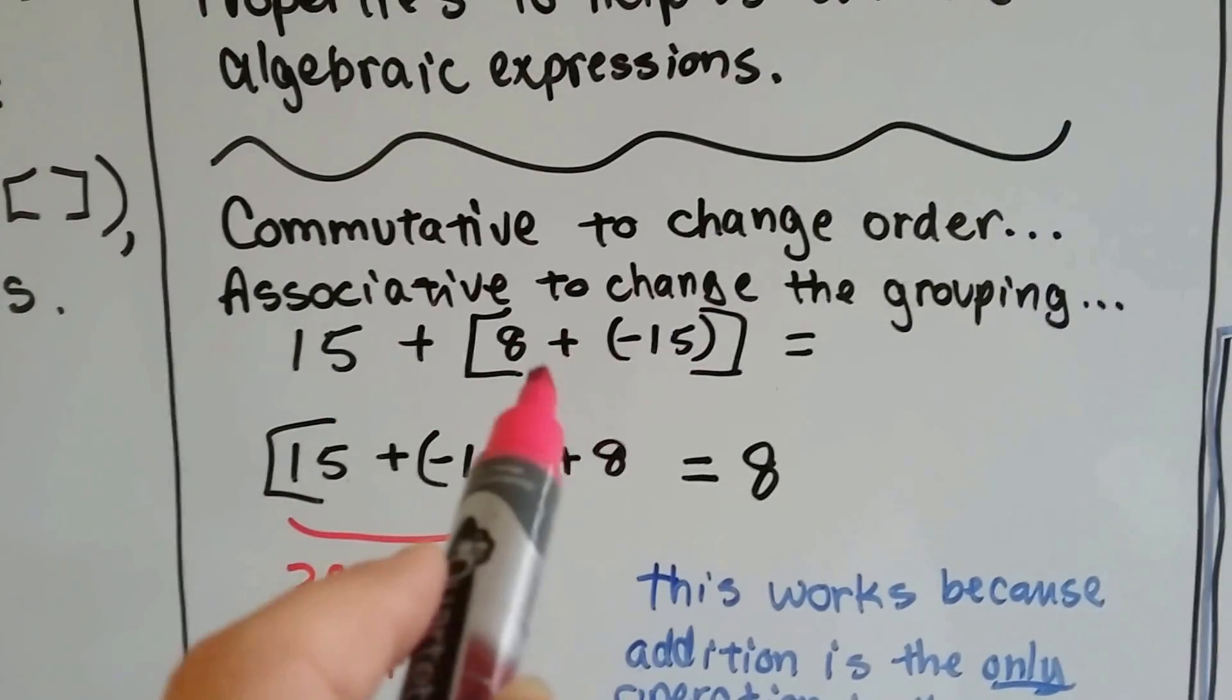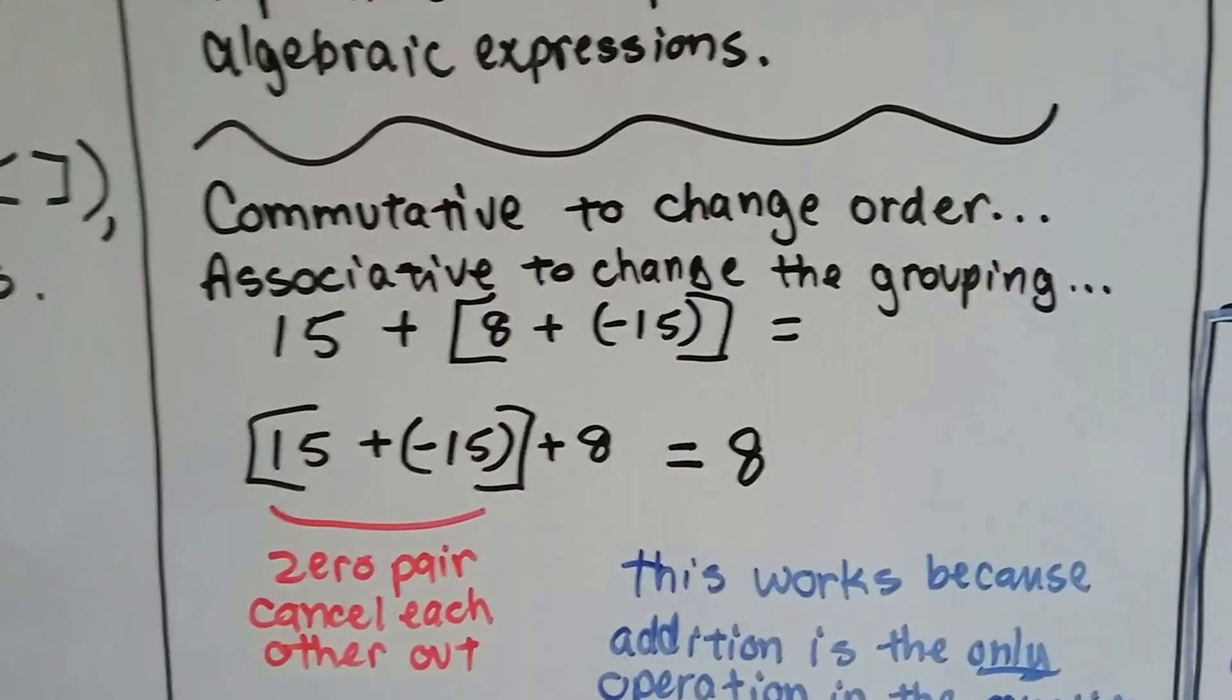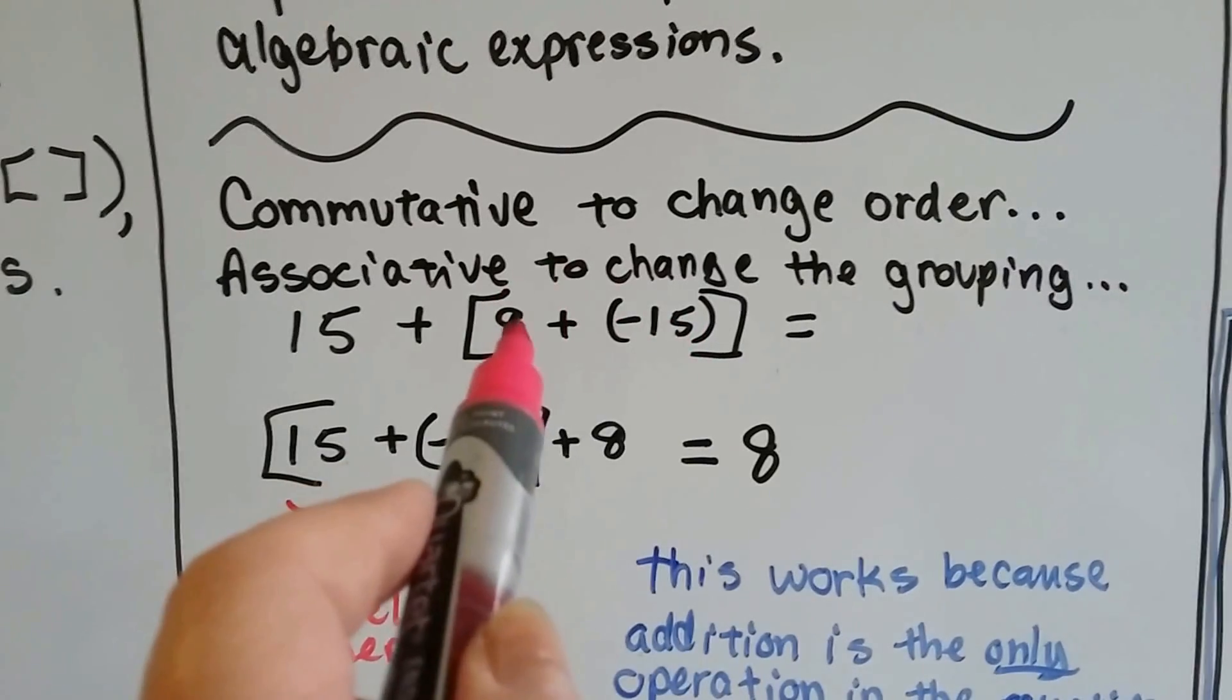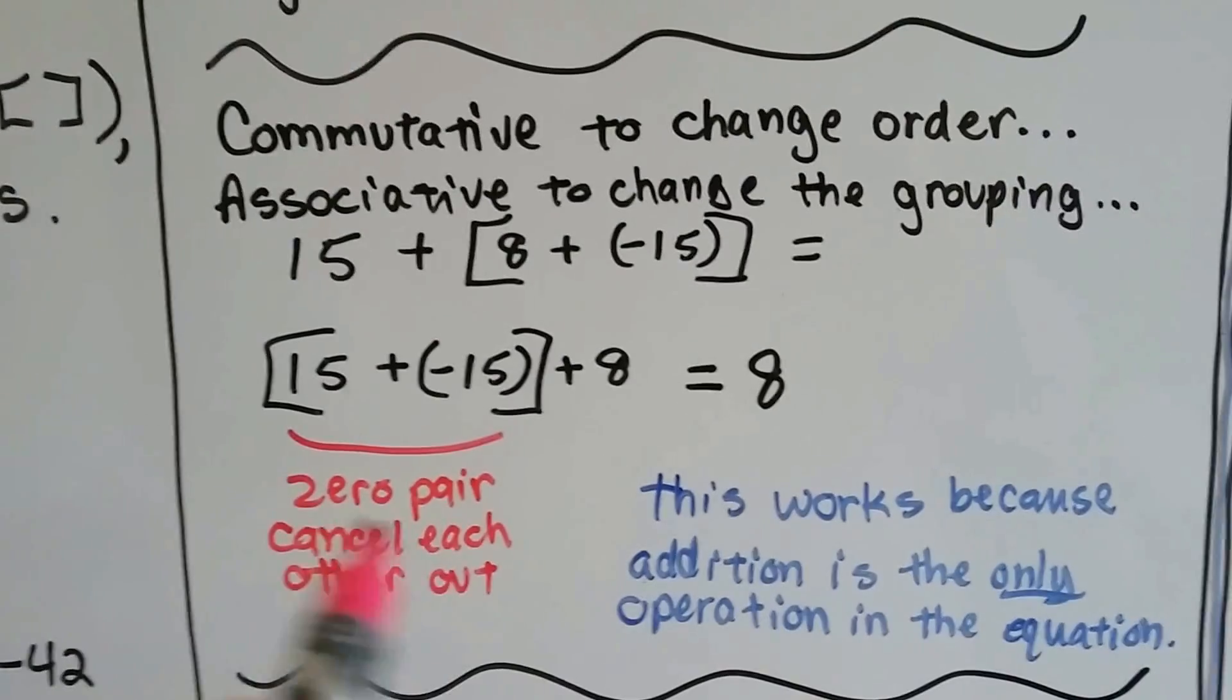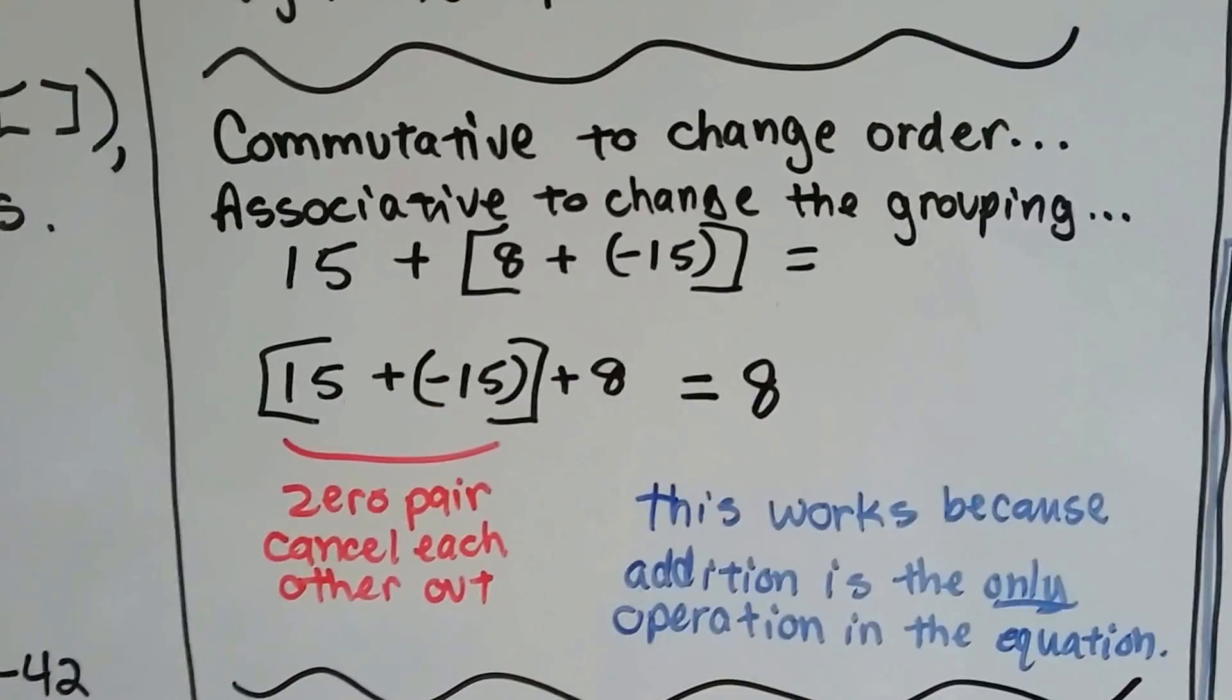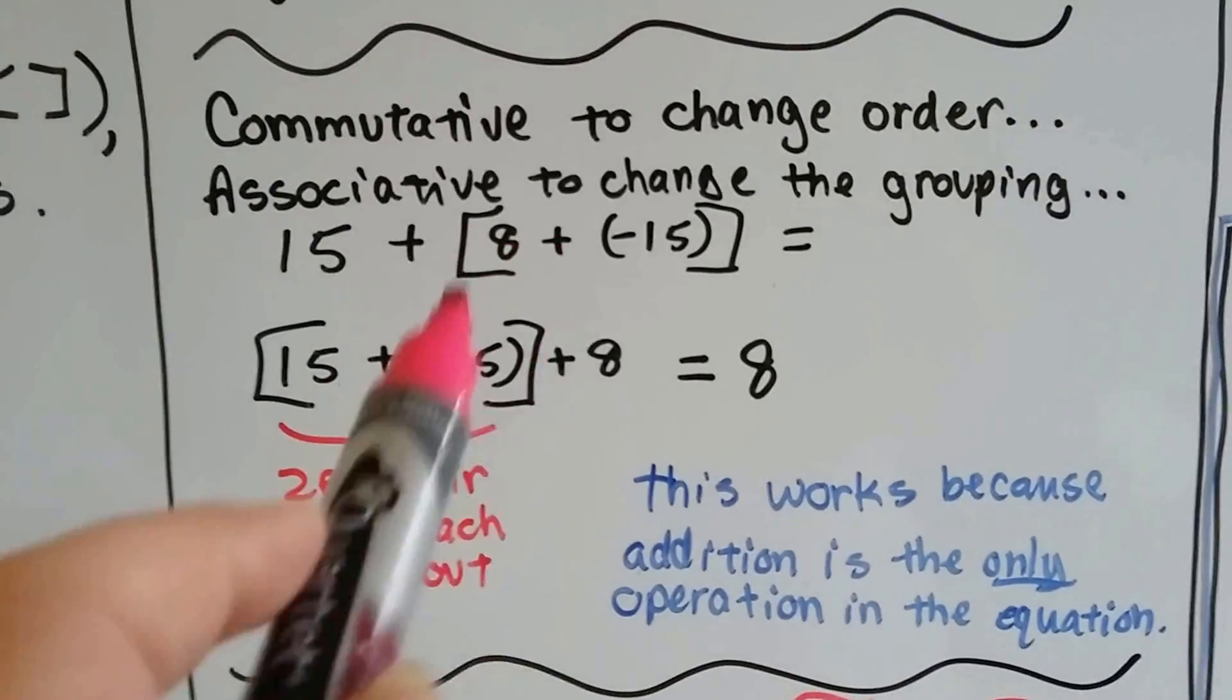If there was multiplication and division in here, we wouldn't have been able to change the order so easily. But because they're all addition, it doesn't matter which one we add up first. We move the 15 over here and the 8 over there. And now, look, we've got a plus 15 and a minus 15. Those are zero pairs. They cancel each other out. That's zero. What's zero plus 8? 8. And just remember it worked because it was all addition in the operation.